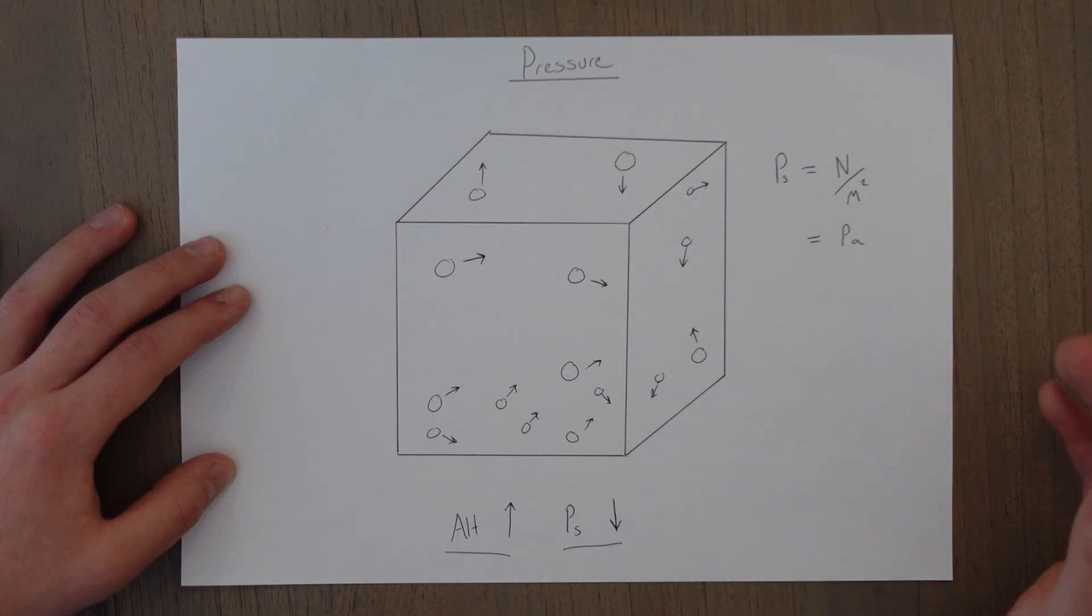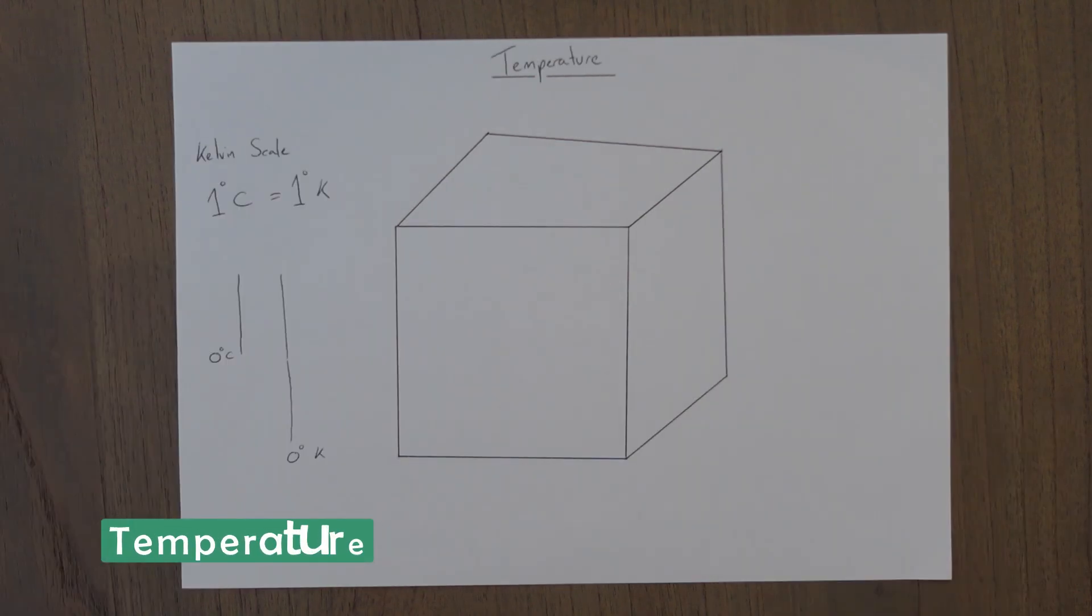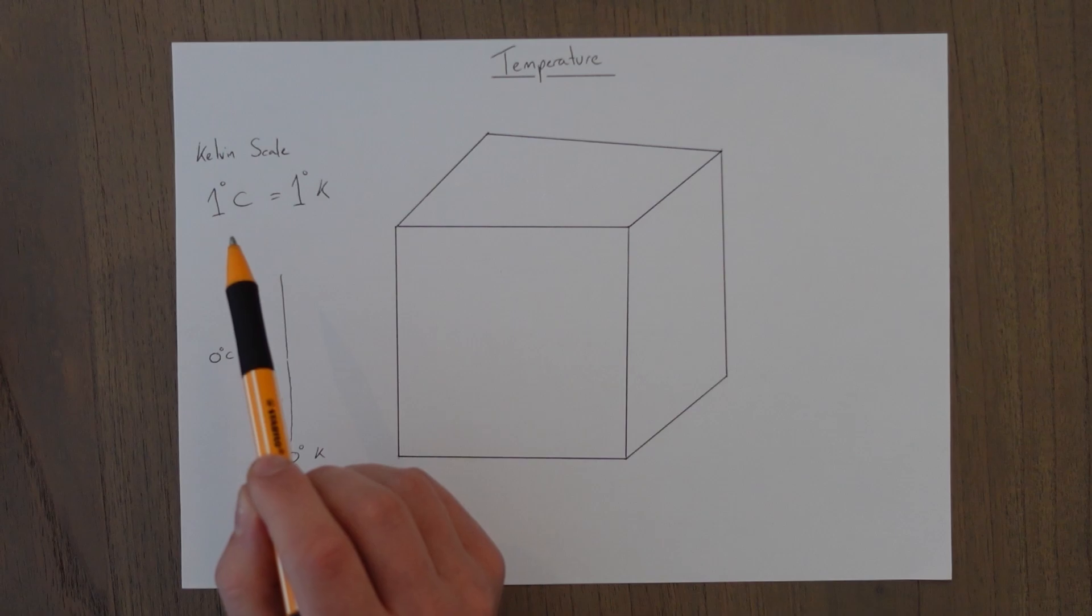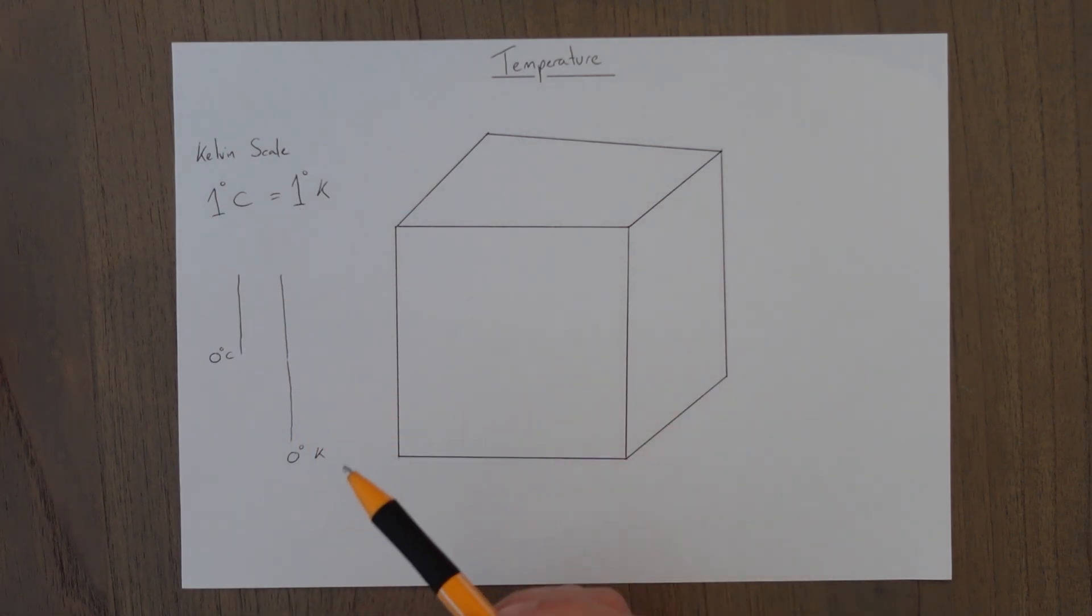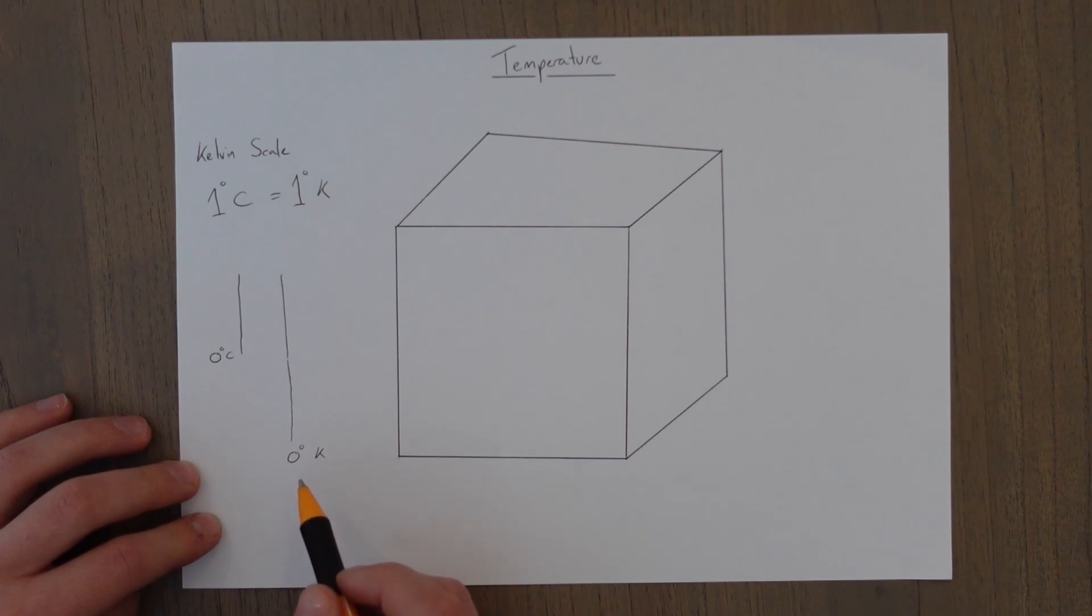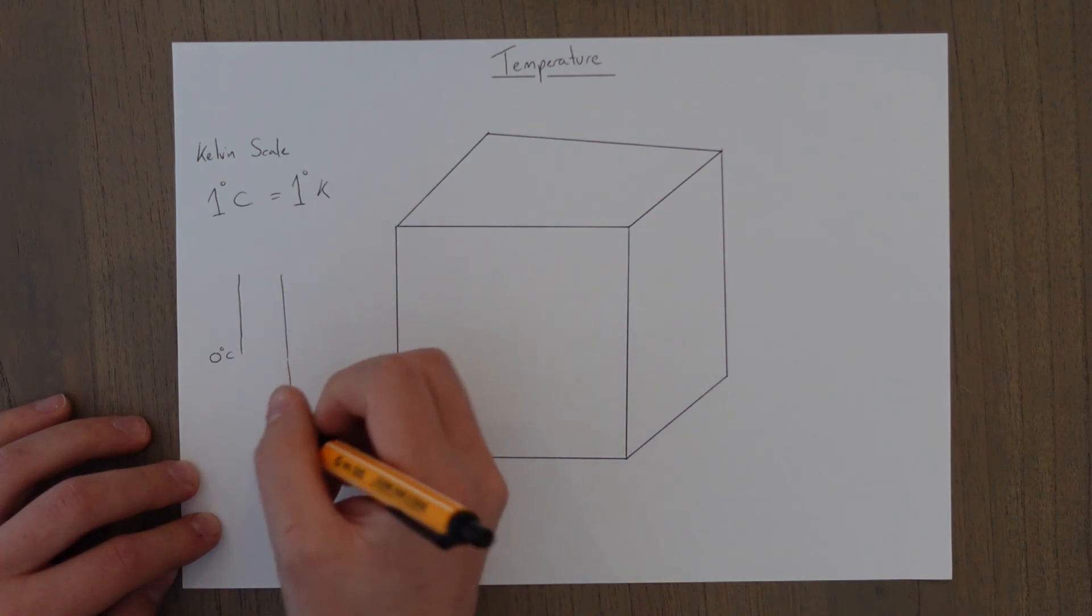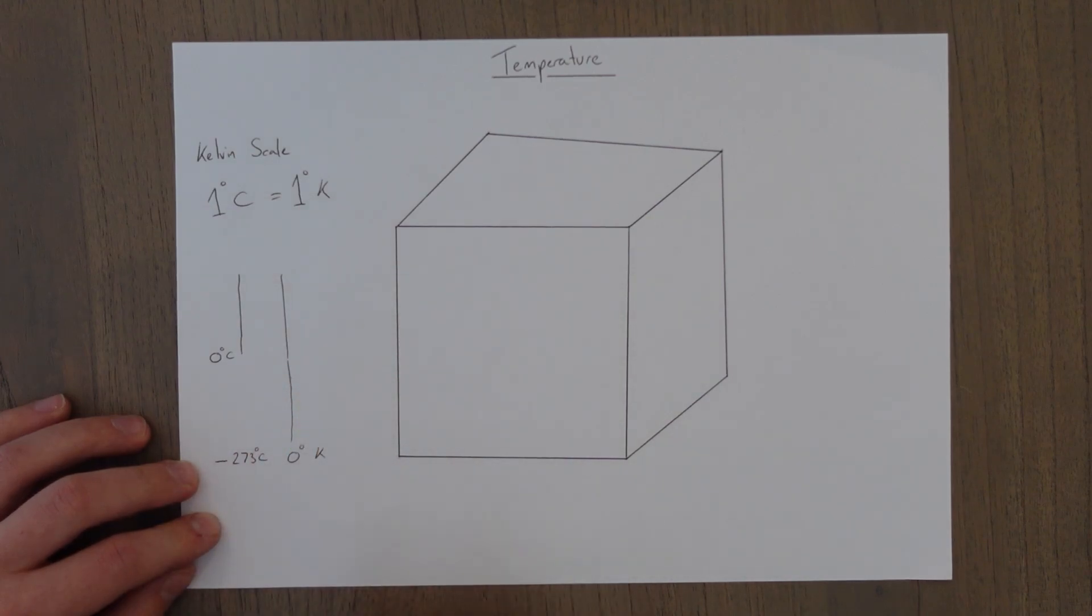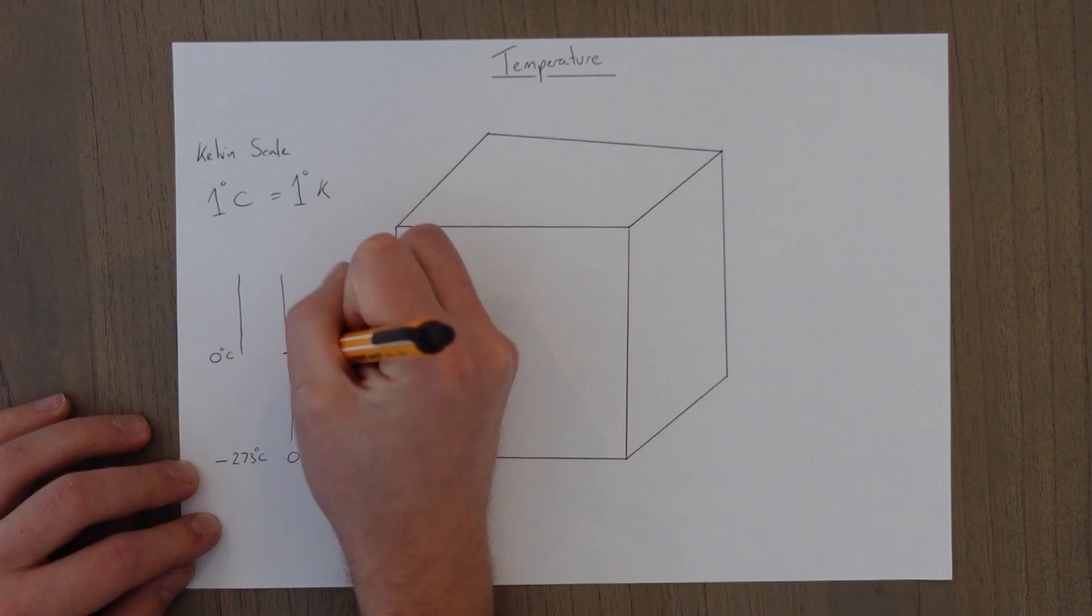Another thing that reduces with altitude is temperature. When we're talking about temperature in principles of flight, we generally deal with something called the Kelvin scale. Kelvin scale is very easy because one degree of Celsius equals one degree Kelvin, so the increments are the same. The only difference is the zero point. For Celsius, the zero is at the freezing point of water. For Kelvin, the zero is at something called absolute zero, which is where it's so cold that molecules stop moving around. This temperature is equivalent to minus 273 degrees Celsius. So the zero on Celsius would actually be 273 degrees Kelvin.